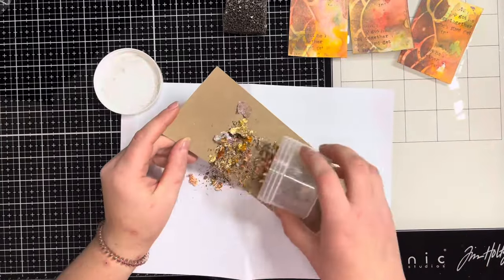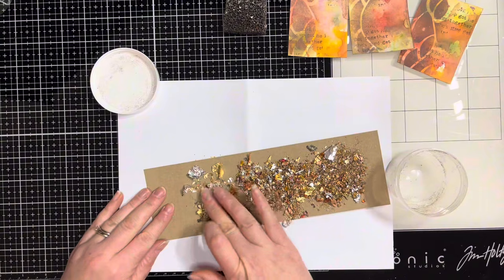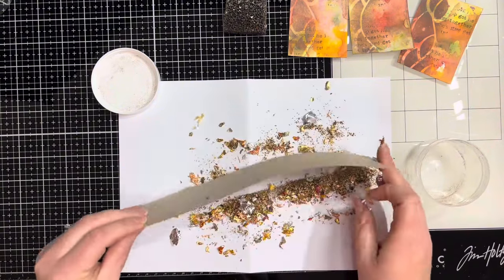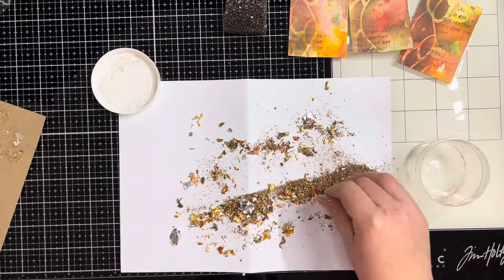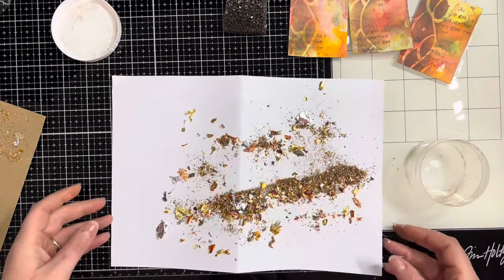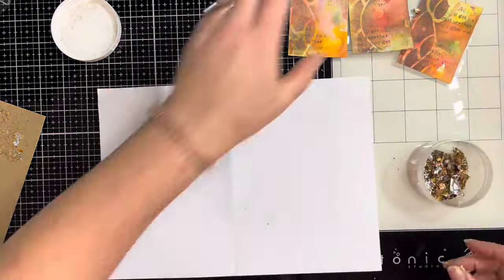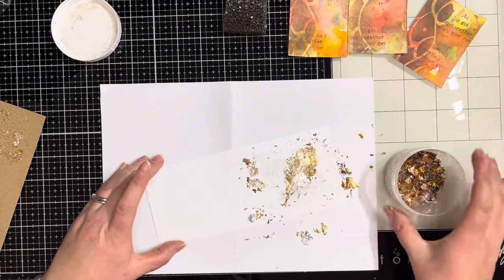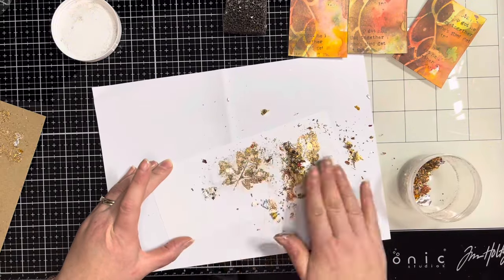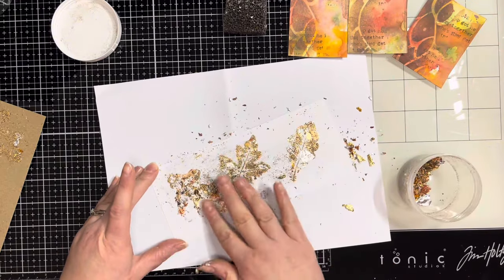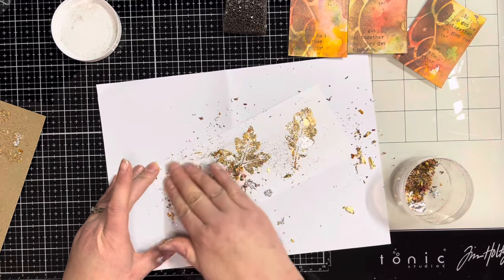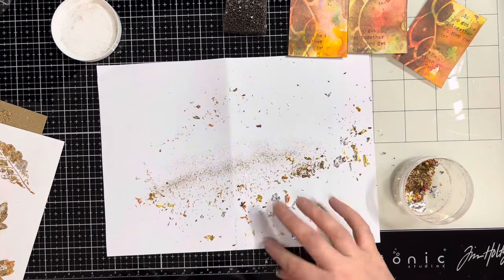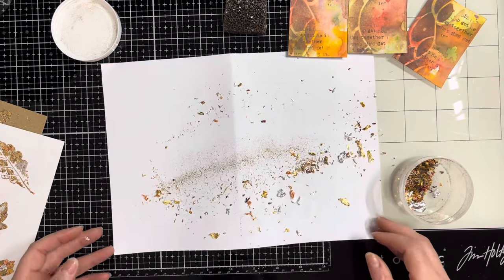Once they're all stamped I've got these gorgeous autumn leaves gilding flakes from Indigo Blue. Sadly this colorway has been discontinued but they have a great variety of other flakes available. I'd highly recommend checking them out. Their flakes are by far the best quality I've ever used. They're not as static as other flakes, so if you've had difficulties using gilding flakes in the past I would recommend giving the Indigo Blue flakes a go.